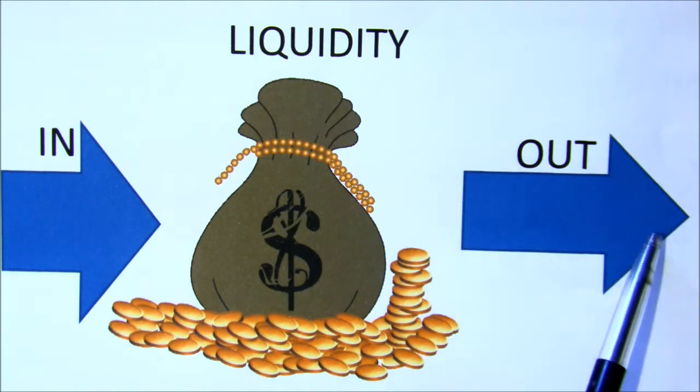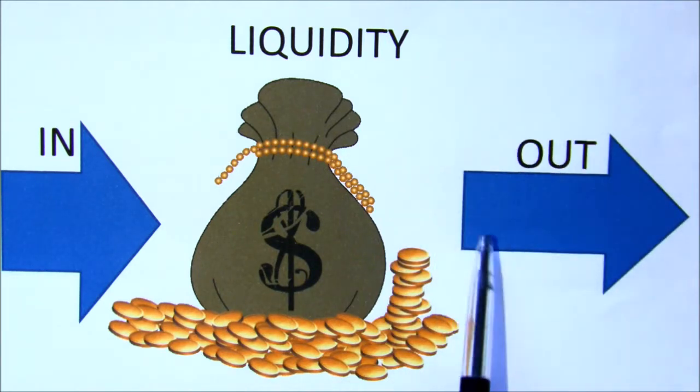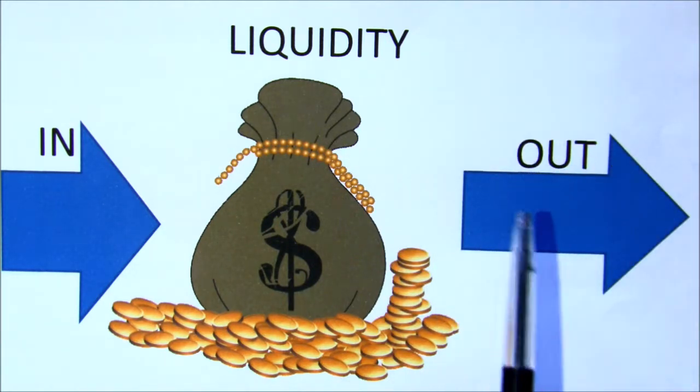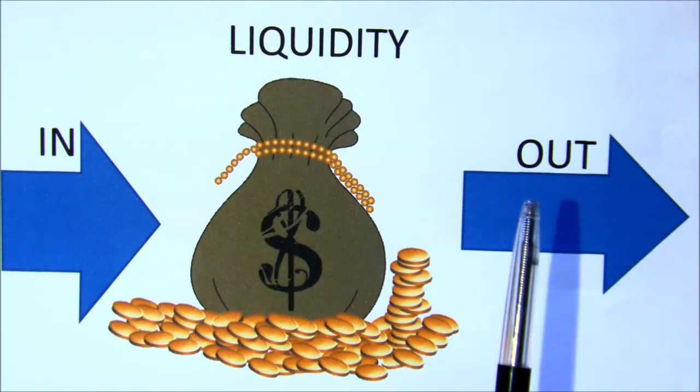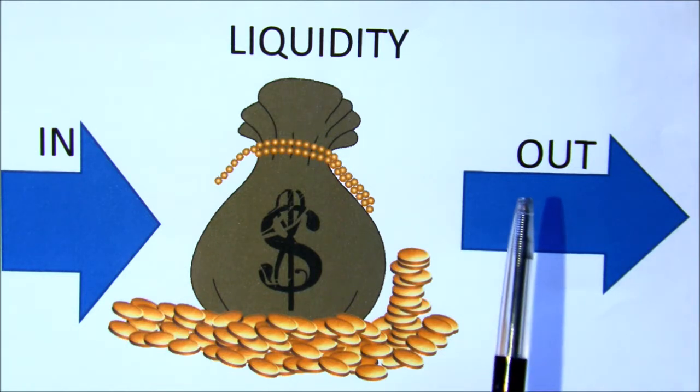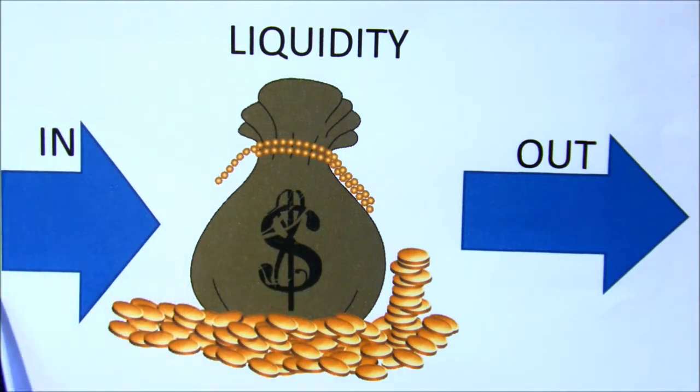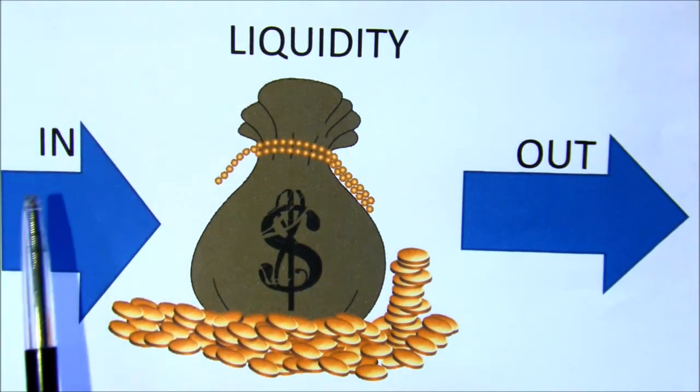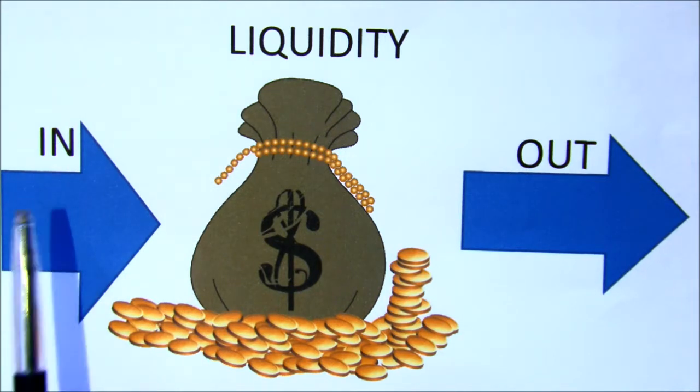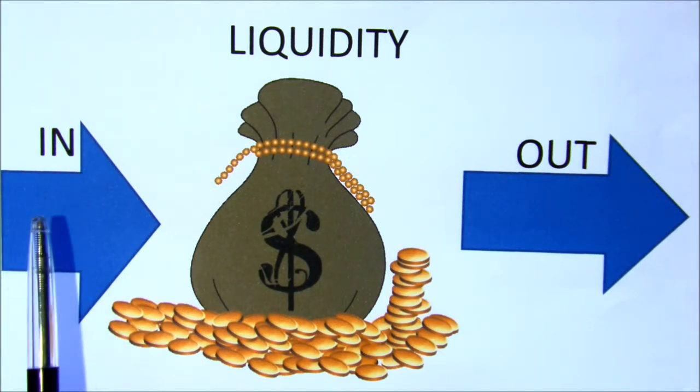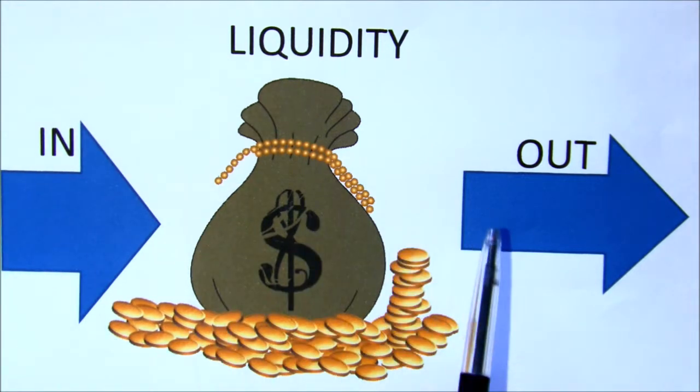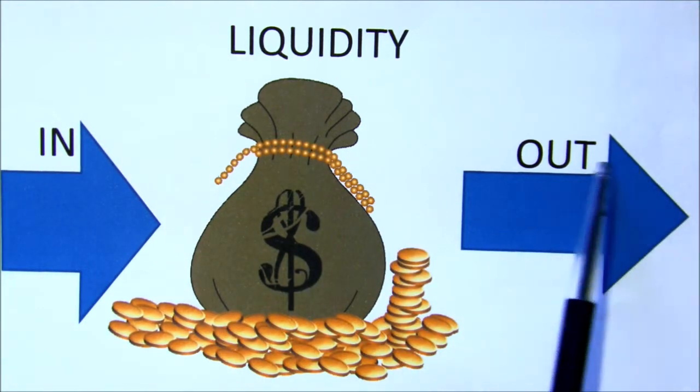So, it comes in and it goes out. Amongst the things that it'll go out on is to pay all the accounts. From a liquidity point of view, what the business wants to know is, how much cash is in the business, or how much cash is expected to come into the business in the short term? Very importantly, we're looking at short term here. And how much do we owe? How much is expected to go out?